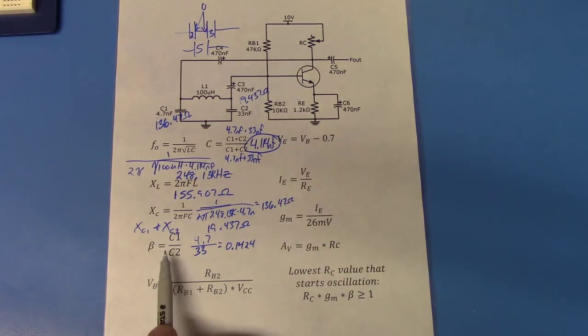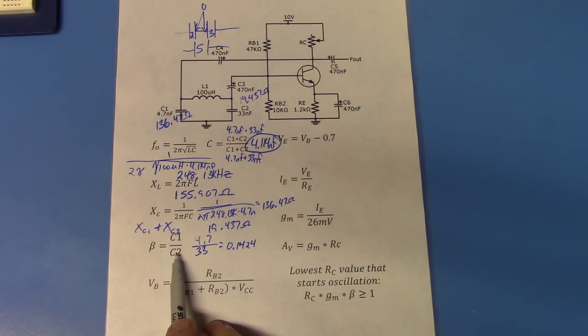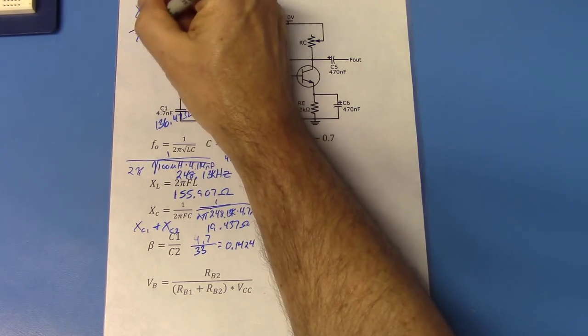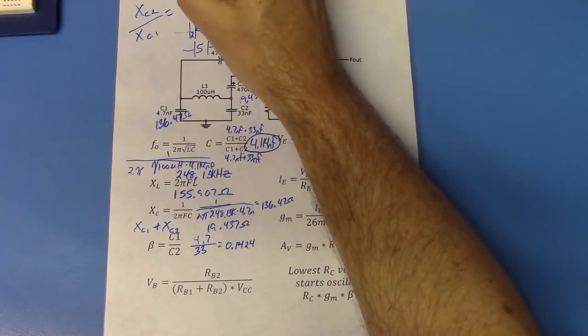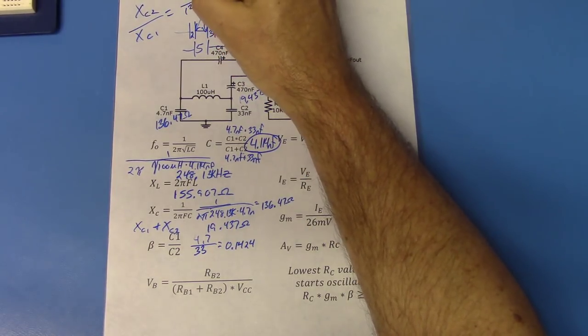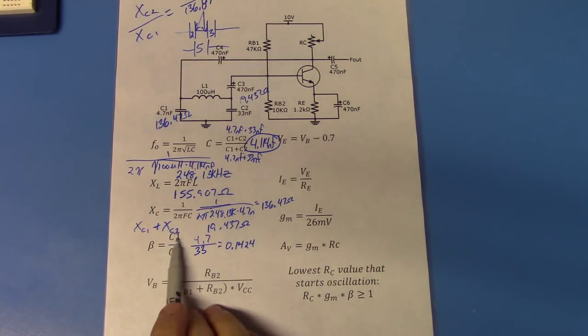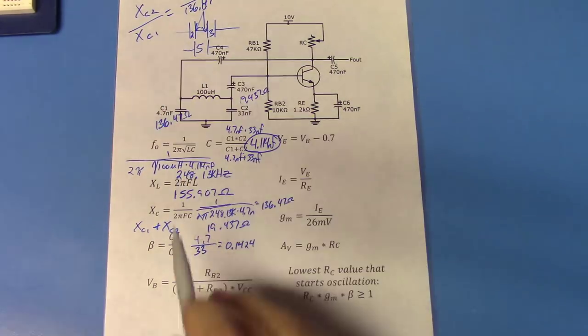So it's an inverse proportionality. So what we do is we just leave it as 4.7 ohms, or C1 divided by C2. We could just as easily have said XC2 divided by XC1, and that would give us 19.437 over 136.47. And guess what that's going to give us? The exact same thing, 0.1424. So it's just easier to leave it like this, because we know that it's an inverse proportionality, and it's just easier that way. So C1 divided by C2. Again, you can do it with the capacitive reactances, and just flip that around, and it'll work just as well. So let's clean this up, and start working on the biasing of our circuit.